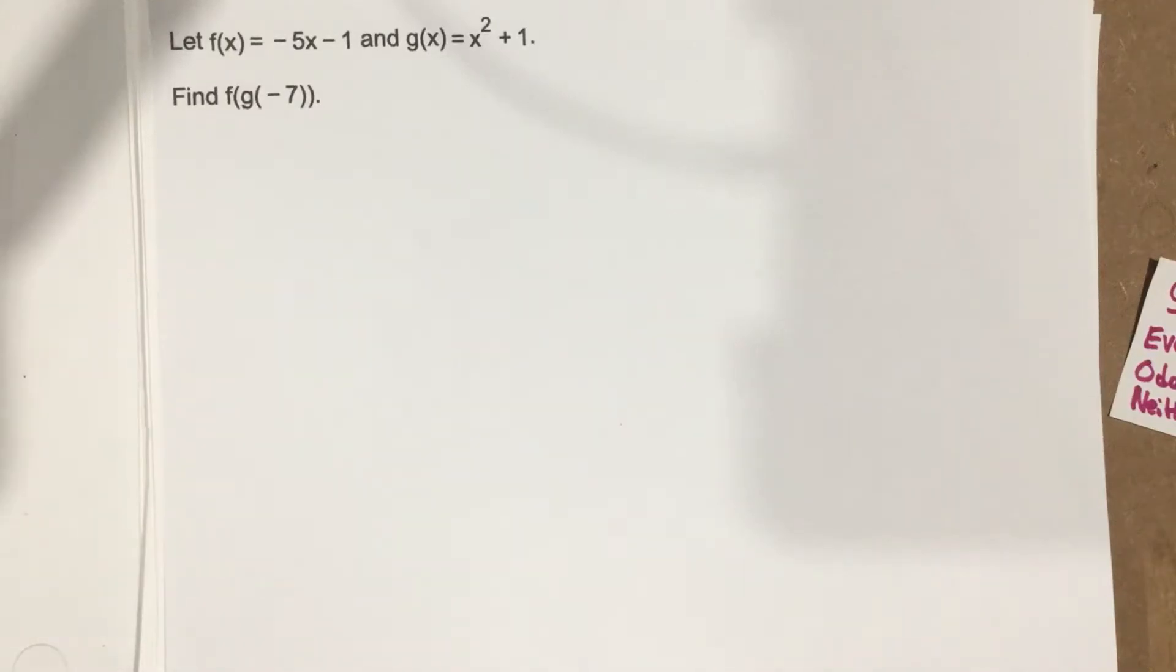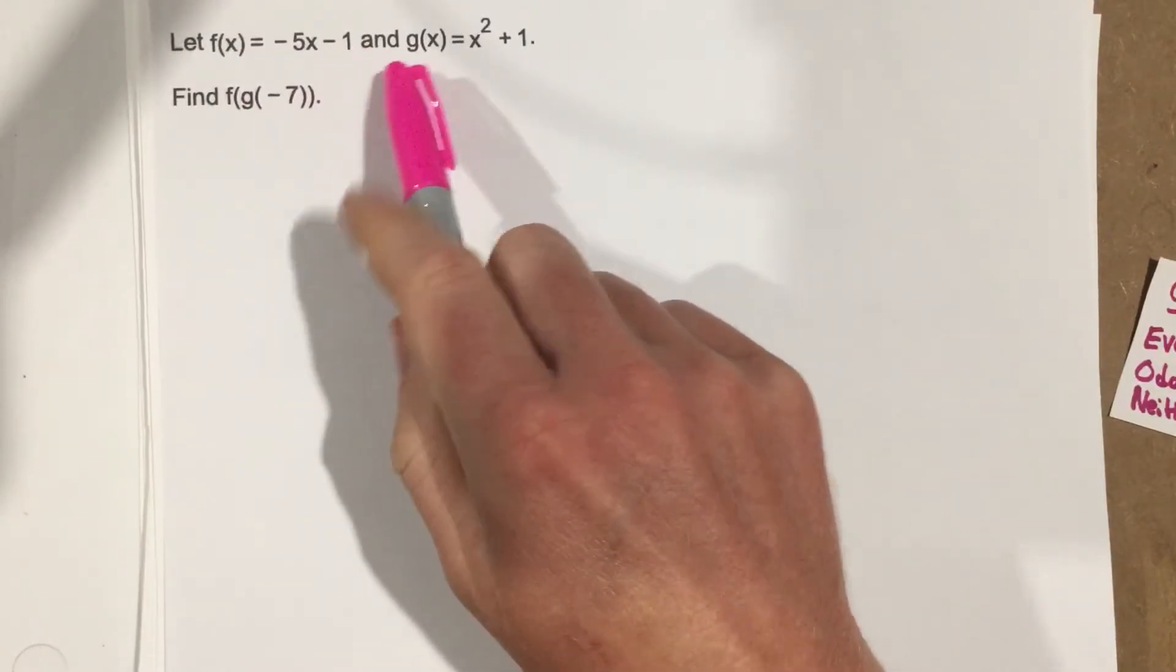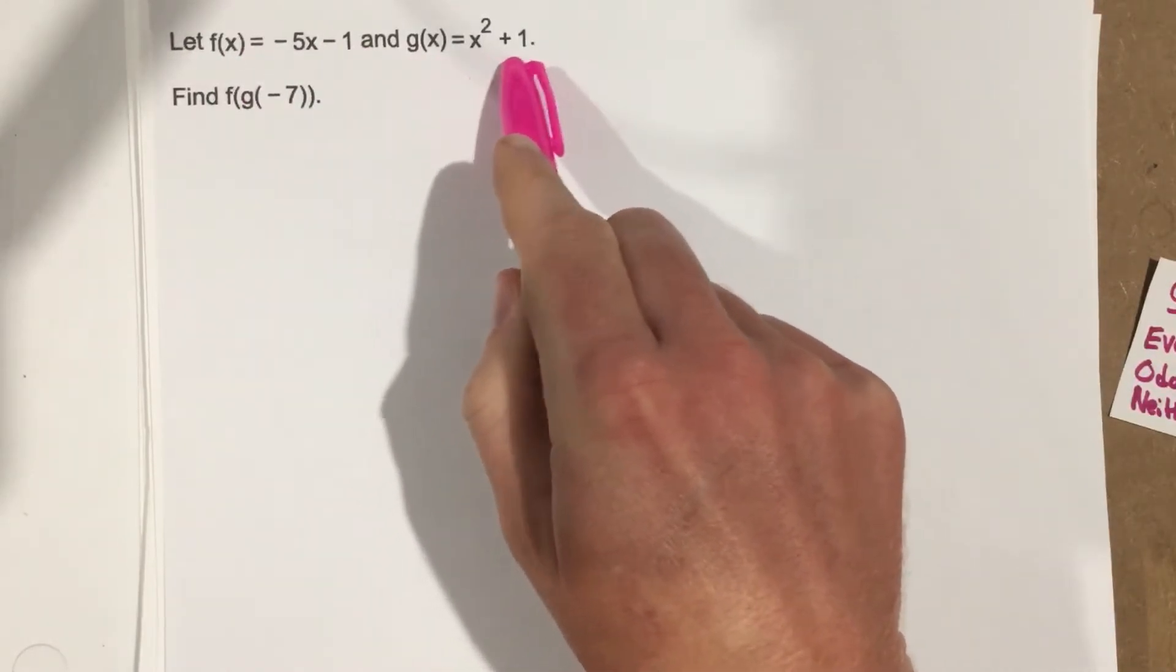This is problem number 8 from section 1.1. In this problem it says let f of x equal negative 5x minus 1 and g of x equal x squared plus 1.